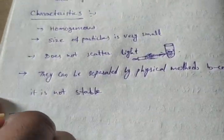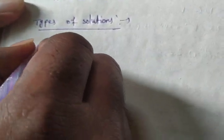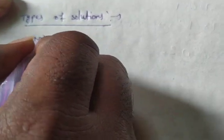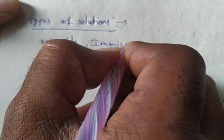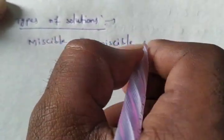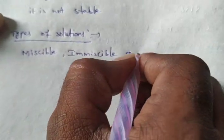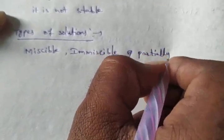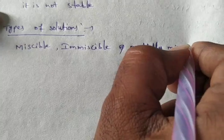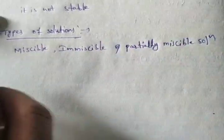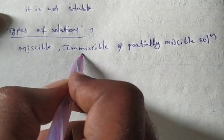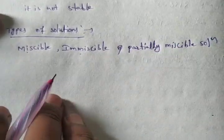Types of solutions. Here, mainly, types of solutions: miscible solutions, immiscible solutions, and partially miscible solutions.